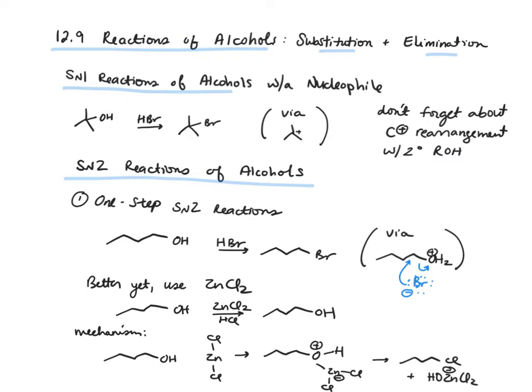Better yet, we can use zinc chloride with hydrochloric acid to transform our alcohol into an alkyl chloride. In the mechanism, the oxygen atom attacks zinc chloride, forming this intermediate with a positively charged oxygen atom.